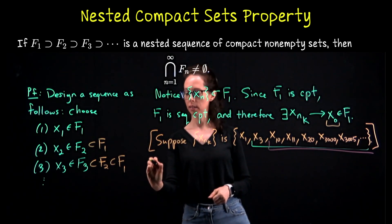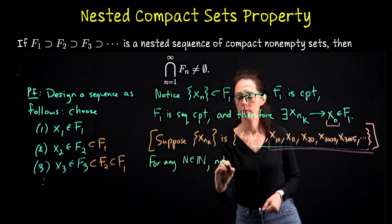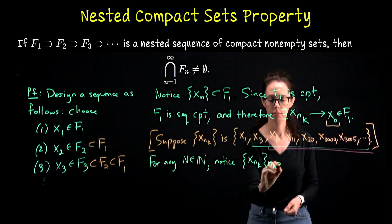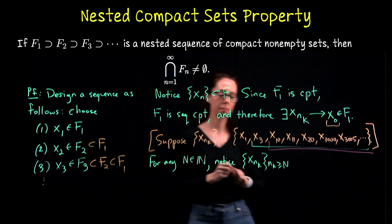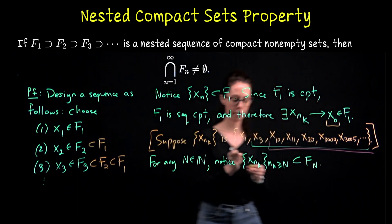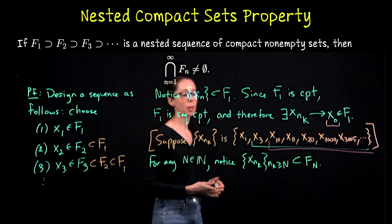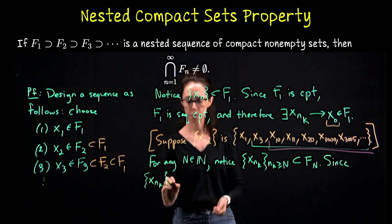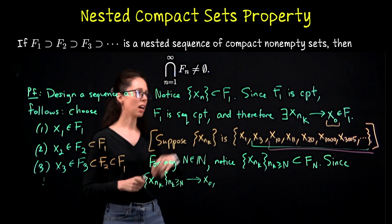For any natural number N, for any index capital N, notice that the subsequence starting with indices at least as large as capital N—because x_N is in F_N as are all future terms—this is a subset of F_N. But if this sequence converges to x₀, so does this sequence. Any subsequence of a convergent sequence converges to the same limit. Since x_{n_k}, starting with the capital N term or larger, converges to x₀.